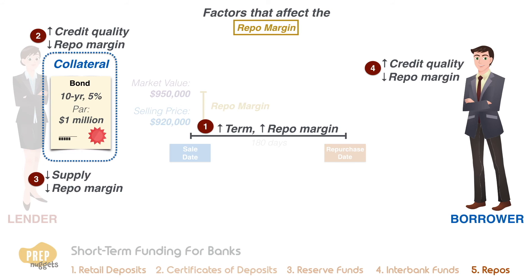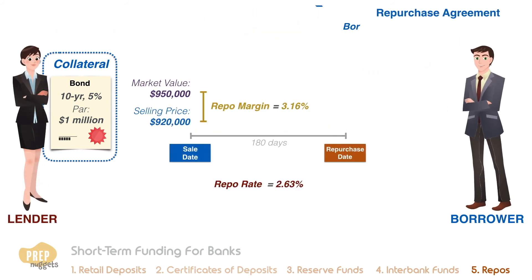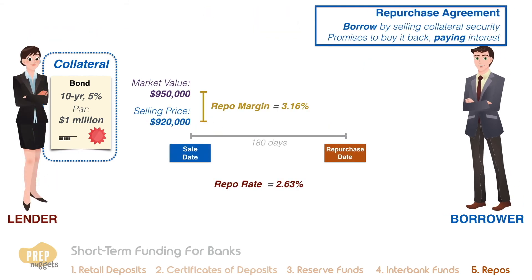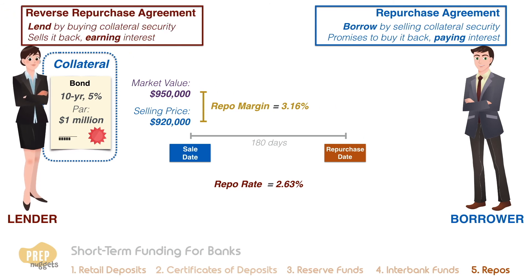In summary, a repo is an agreement whereby one party borrows cash by selling a collateral security and promises to buy it back at a specified future date at a specified price. Interest paid is implicit in the repurchase price. You may also come across the term reverse repurchase agreement, which is essentially the same agreement but viewed from the standpoint of the lender. From her standpoint, she lends cash by buying the collateral security, and on the repurchase date she sells it back and earns interest in the process.